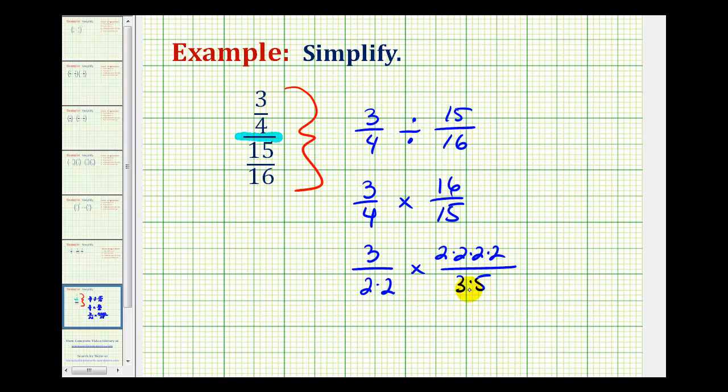So now that it's in this form, we can easily see there's a common factor of three here and here, which was the common factor between three and fifteen. And then notice there are two factors of two common here and here, which is the common factor of four between four and sixteen.